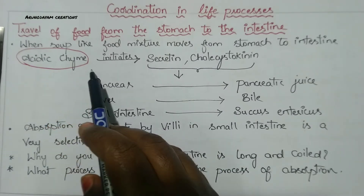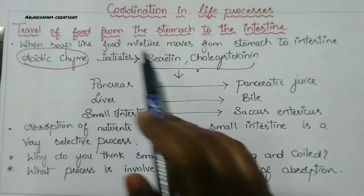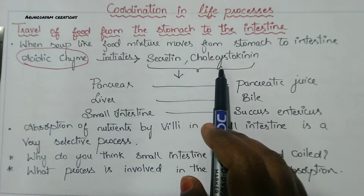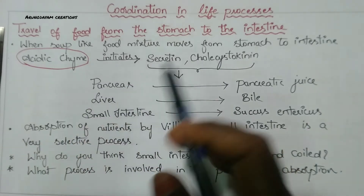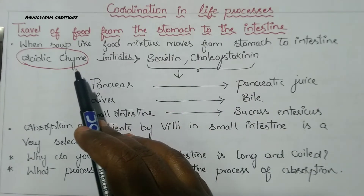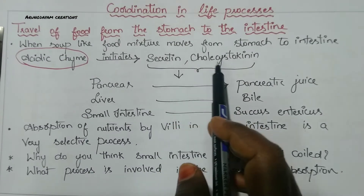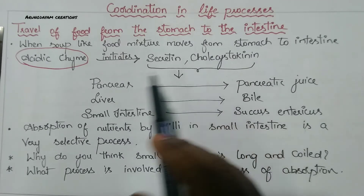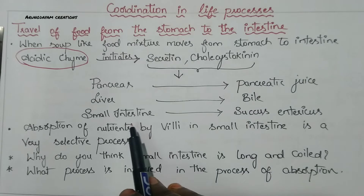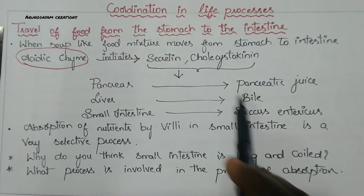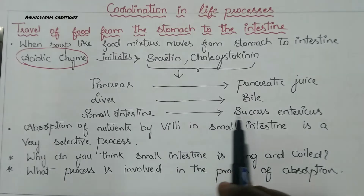Whenever this acidic chyme enters into the duodenum, it initiates the formation of two hormones - that is secretin and cholecystokinin. These two hormones initiate: the pancreas to produce pancreatic juice, the liver to produce bile, and the small intestine to produce succus entericus.